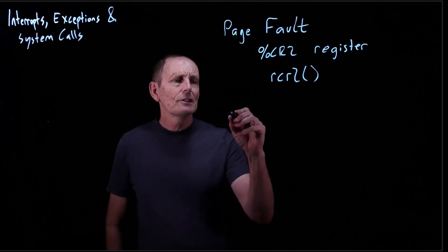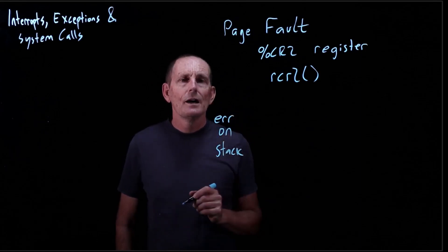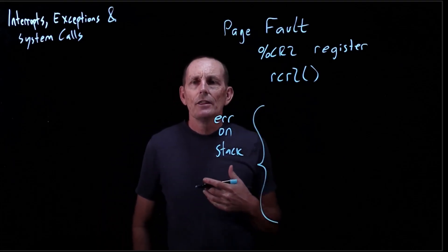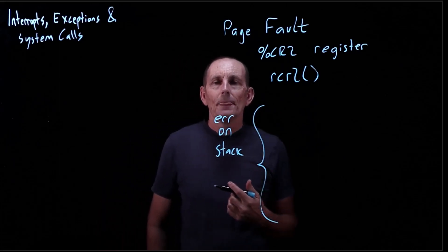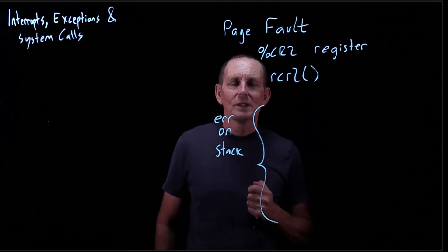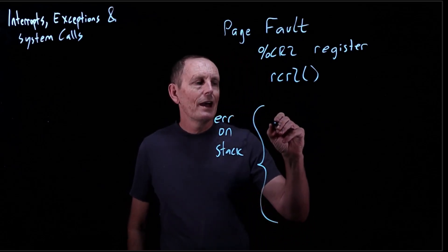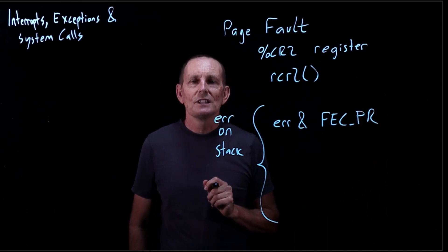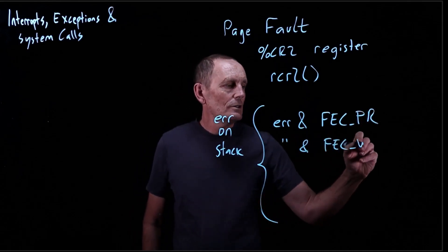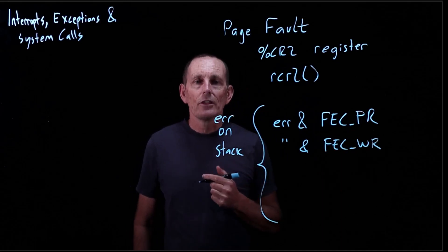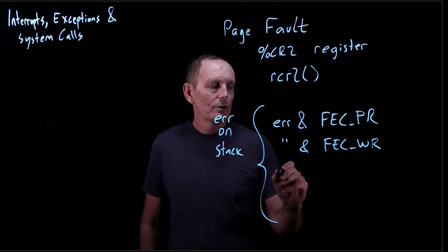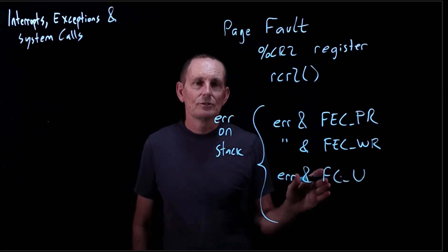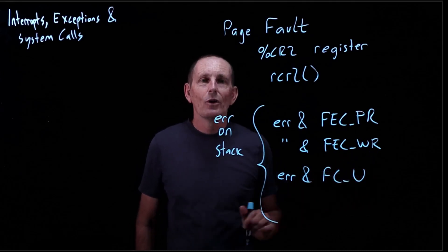But we don't know exactly why. If we look at the error on the stack, it gives us some useful information. We can find out, for instance, that the reason we caused this page fault was because of a protection violation — we can look at the PR bit, and that tells us it was a protection violation. Or we can see that the attempt was to do a write rather than a read of this address. Or this will tell us the current protection level — that is, whether we're in user mode or in kernel mode.